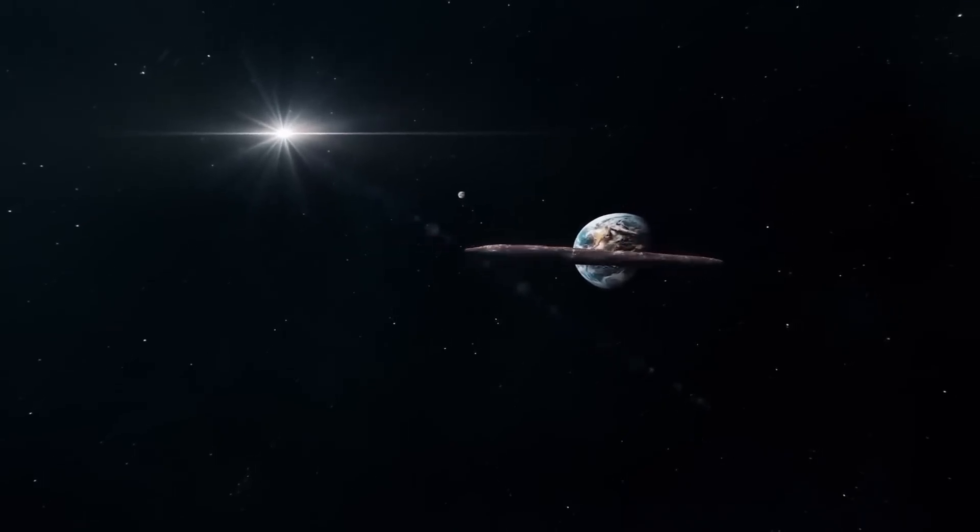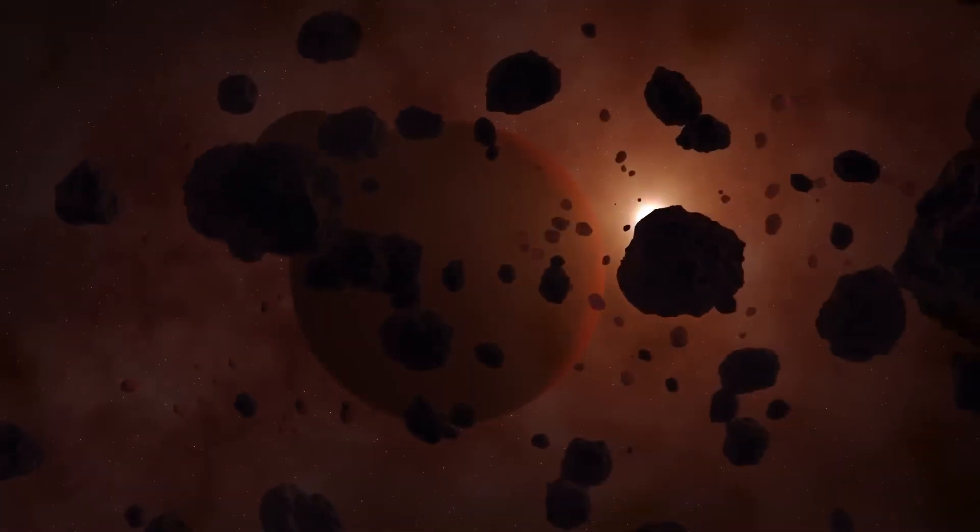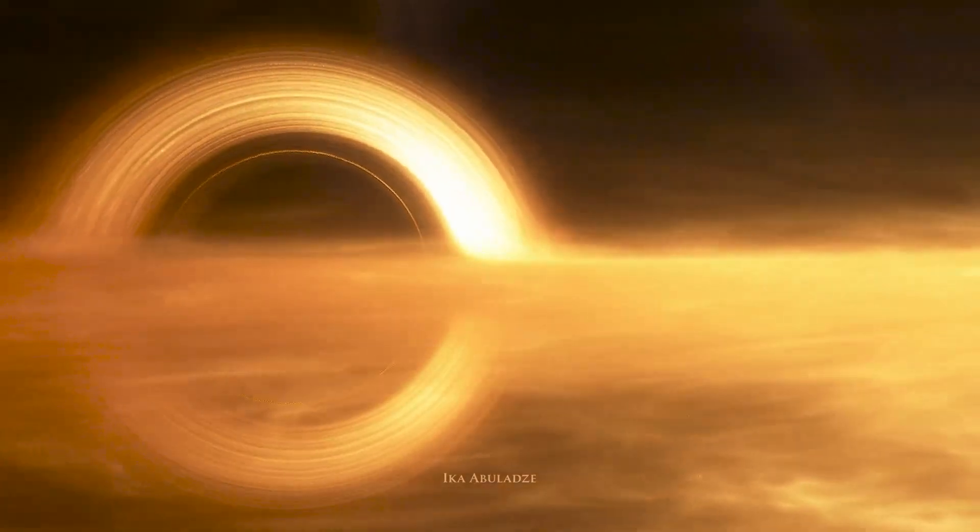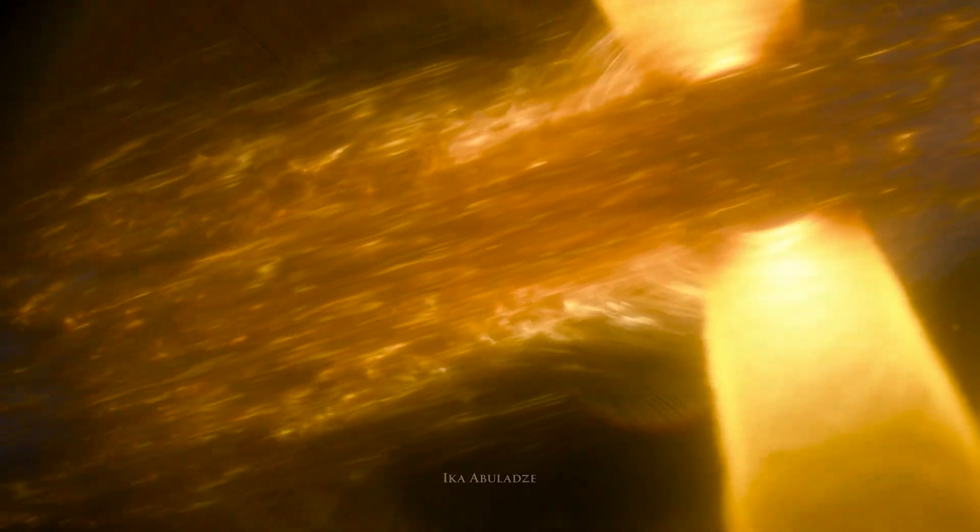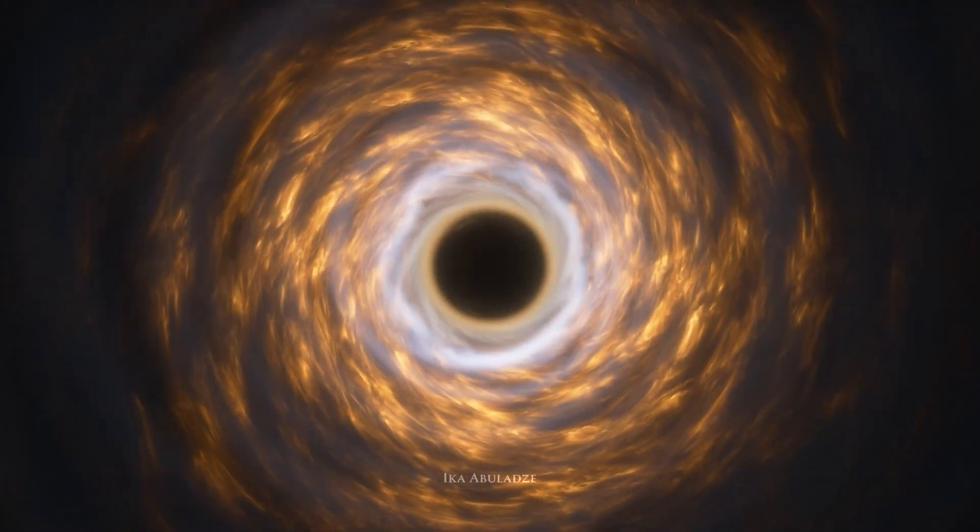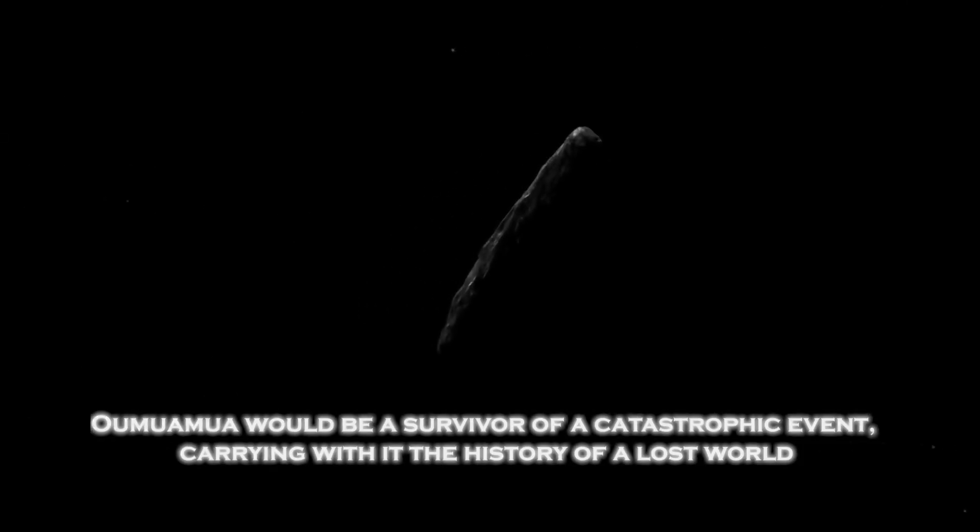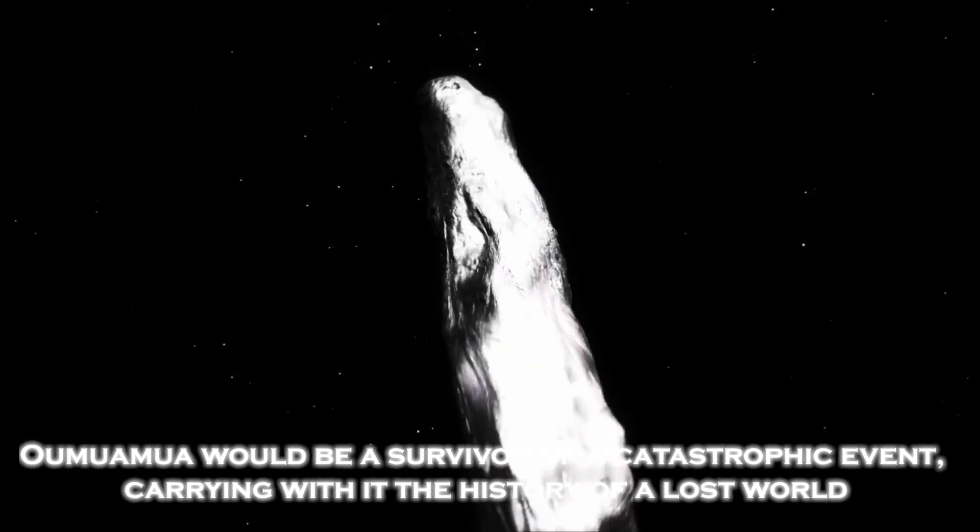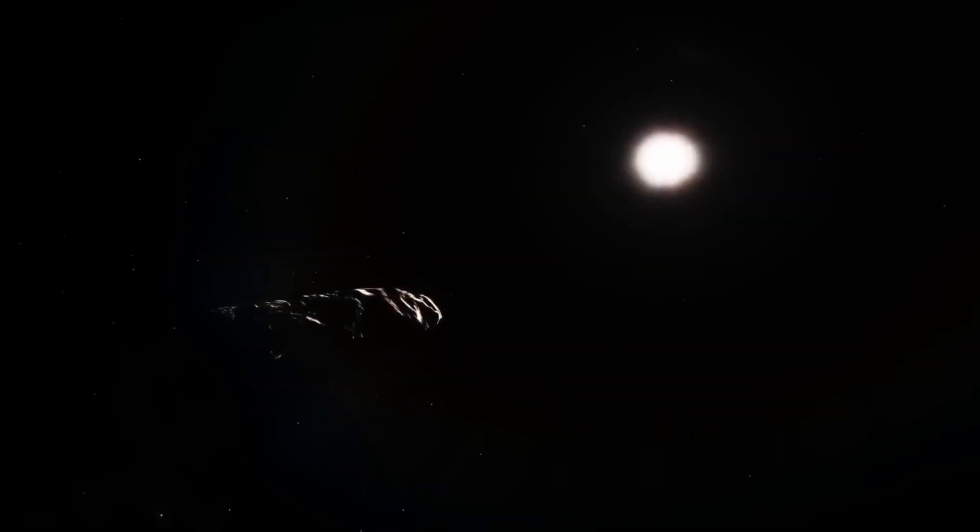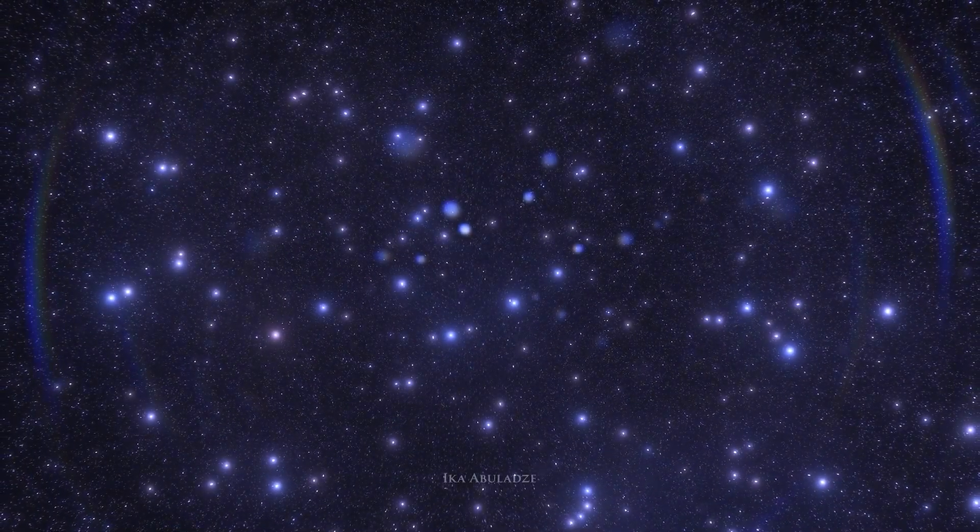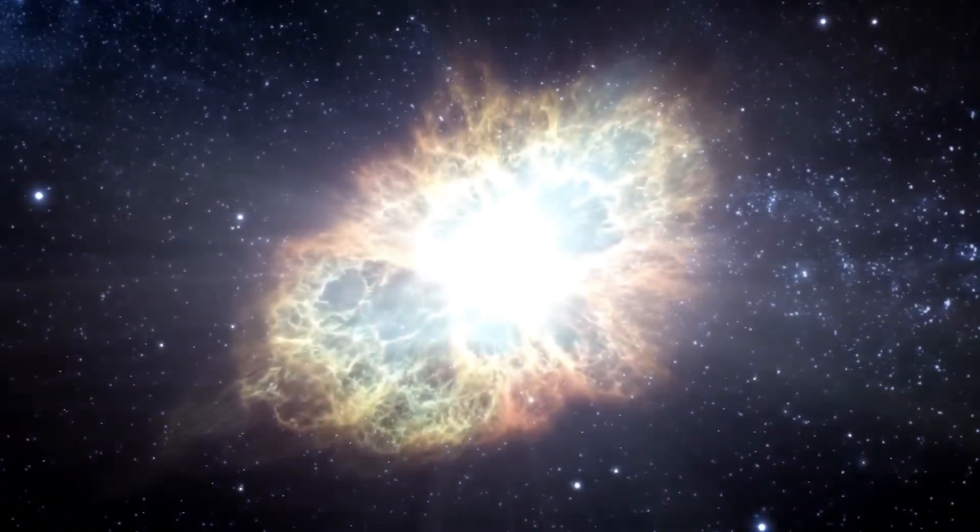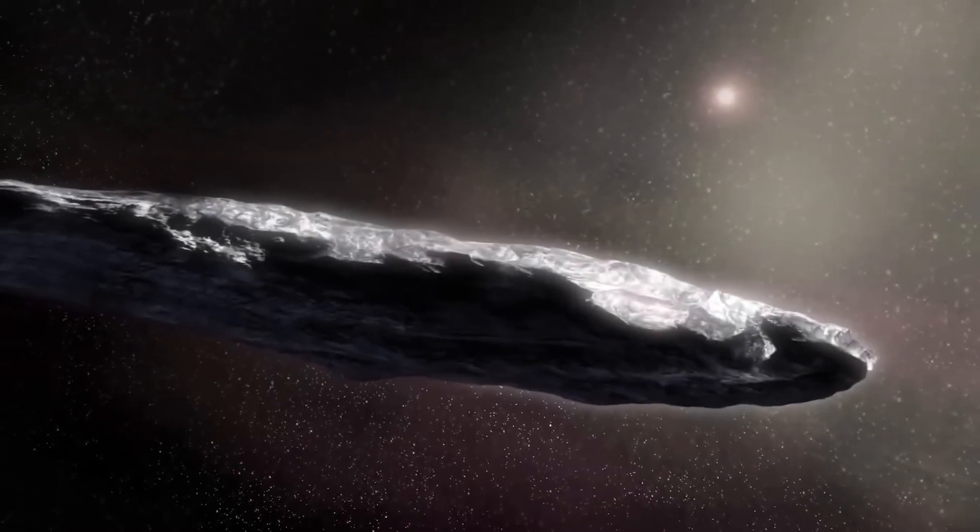One of the most recent theories suggests that Oumuamua could be a fragment of a planet destroyed by extreme gravitational forces. These forces, caused by a massive star or a nearby black hole, could have stretched and torn the planet apart, forming objects with unusual shapes. If this theory is correct, Oumuamua would be a survivor of a catastrophic event, carrying with it the history of a lost world. This opens up a new window to study how star systems evolved and change over time, and how catastrophic events can give rise to objects that end up traveling through the galaxy.